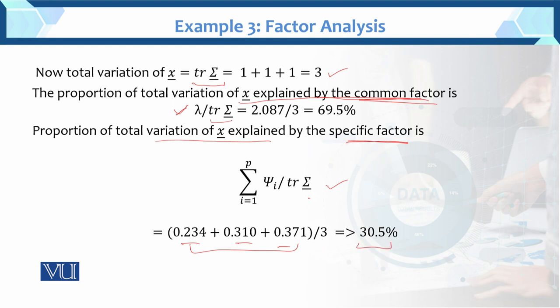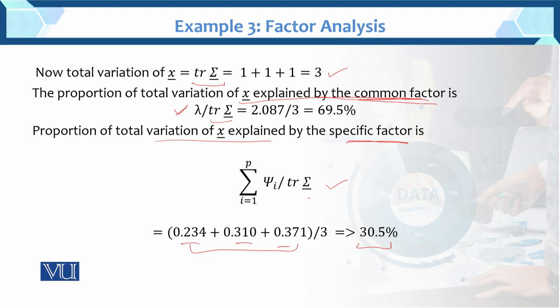After calculation, the specific factor proportion equals 30.5%. The total is 100%: 69.5% is explained by common factors and 30.5% goes to specific factors. This is the principal factor method — solved using eigenvalues and eigenvectors with the principal component approach. This is example number 3 of factor analysis.